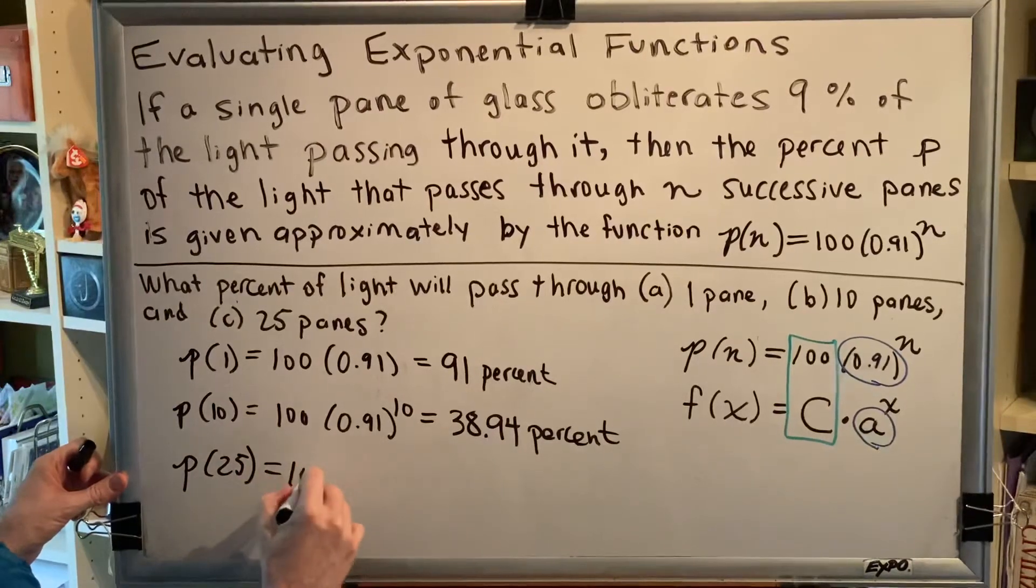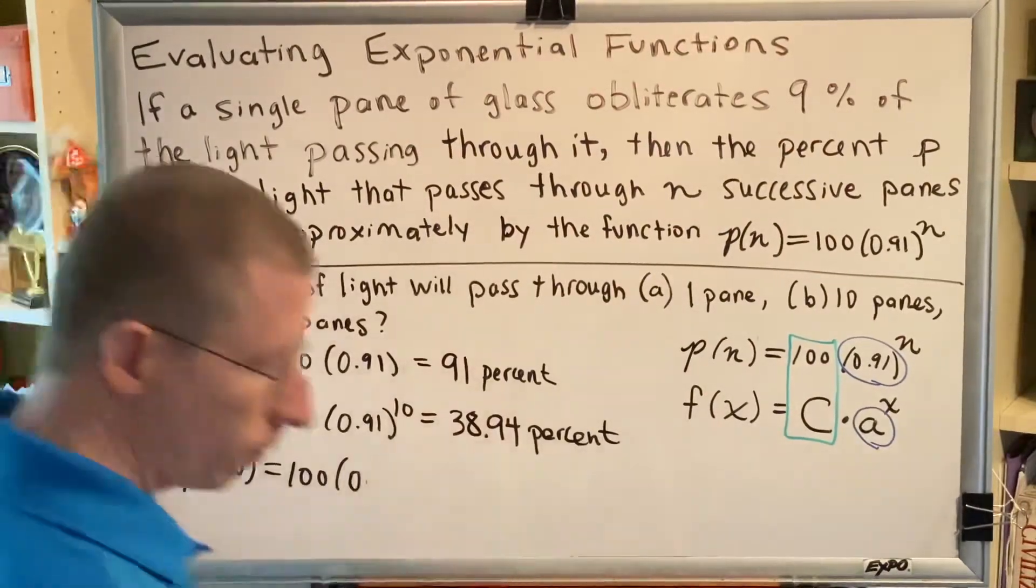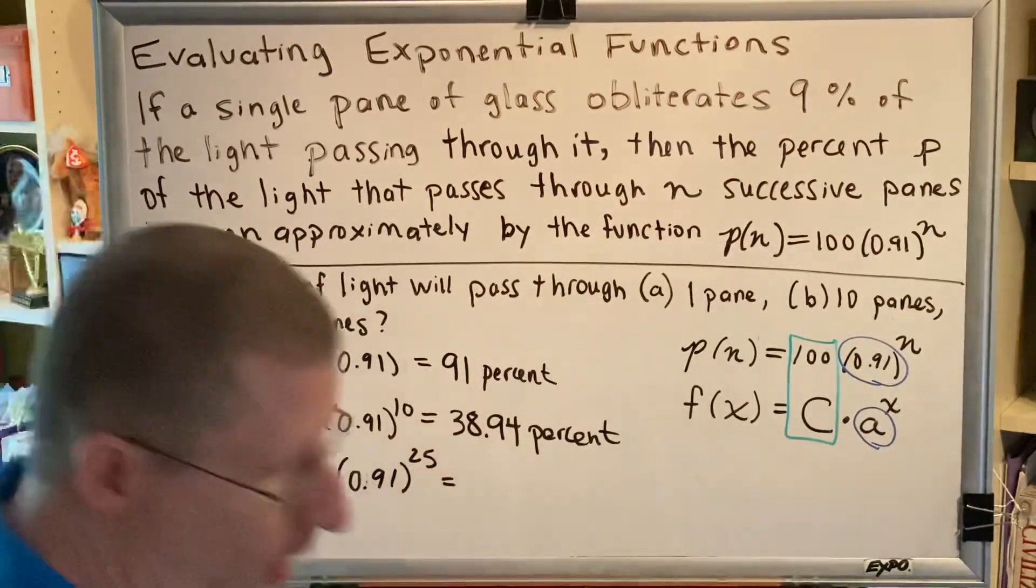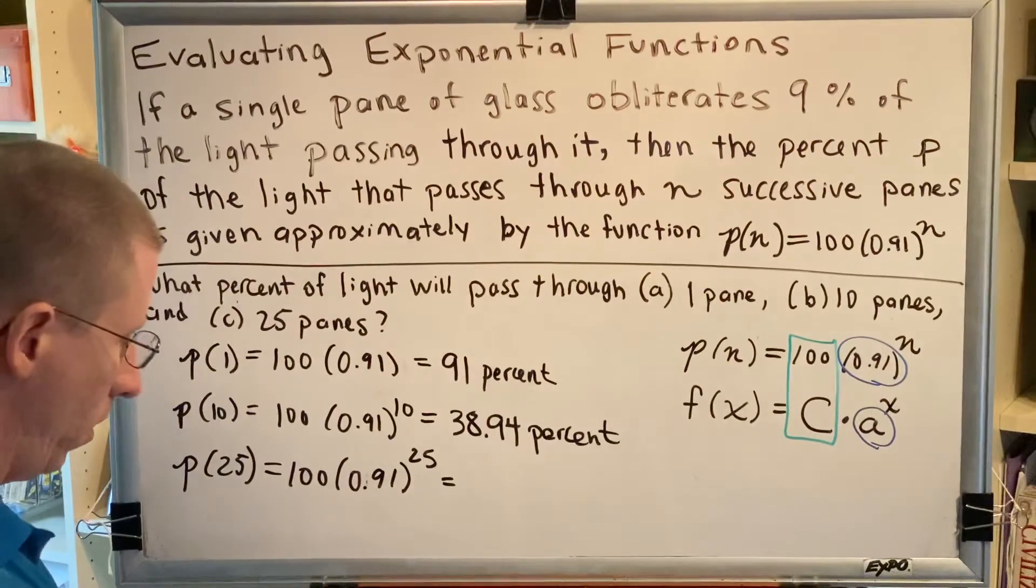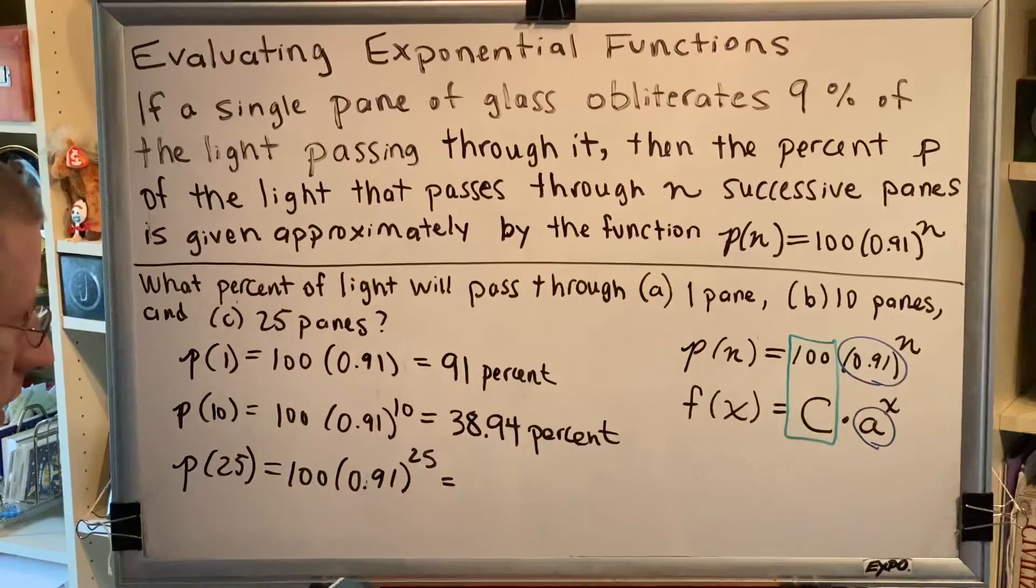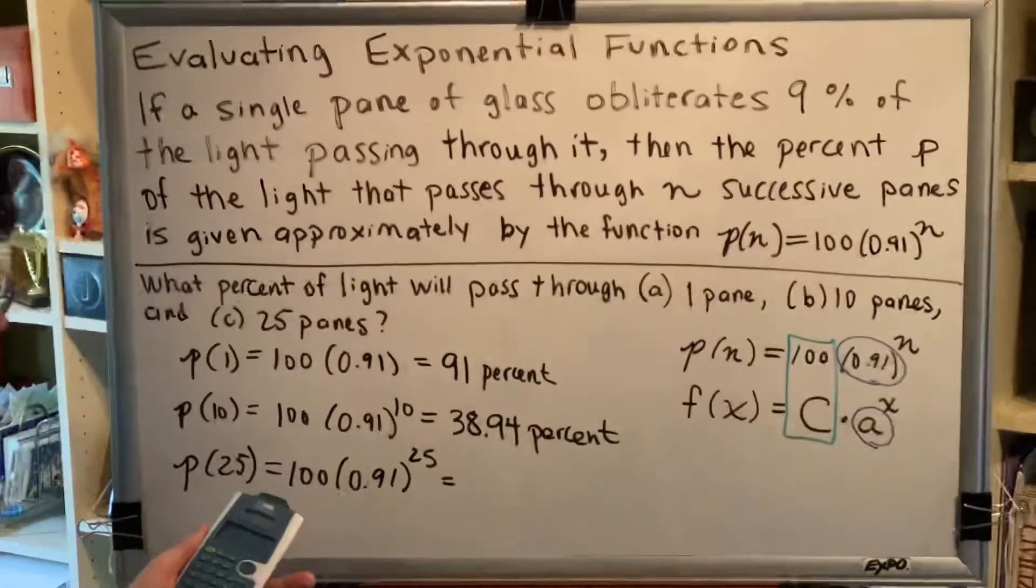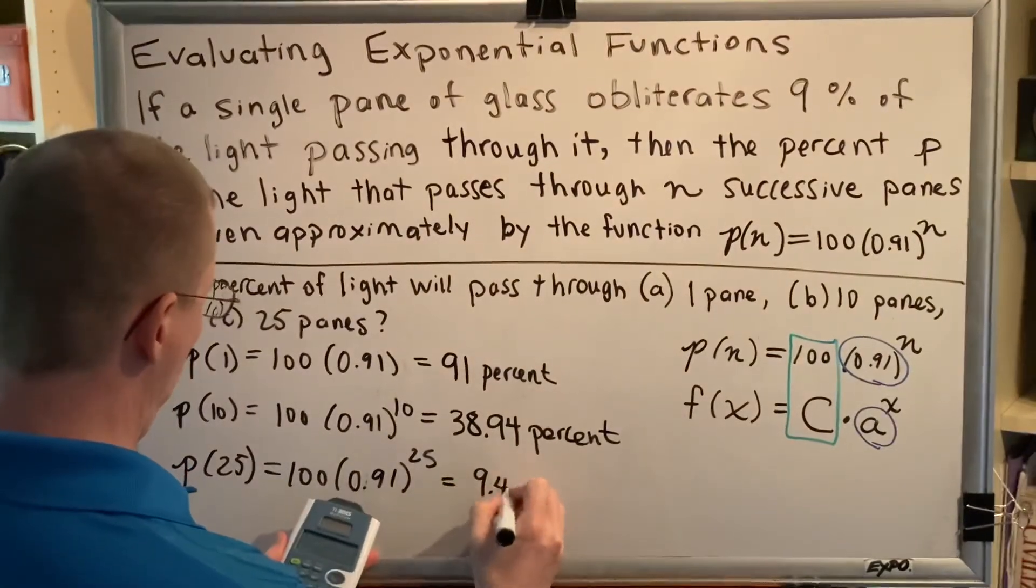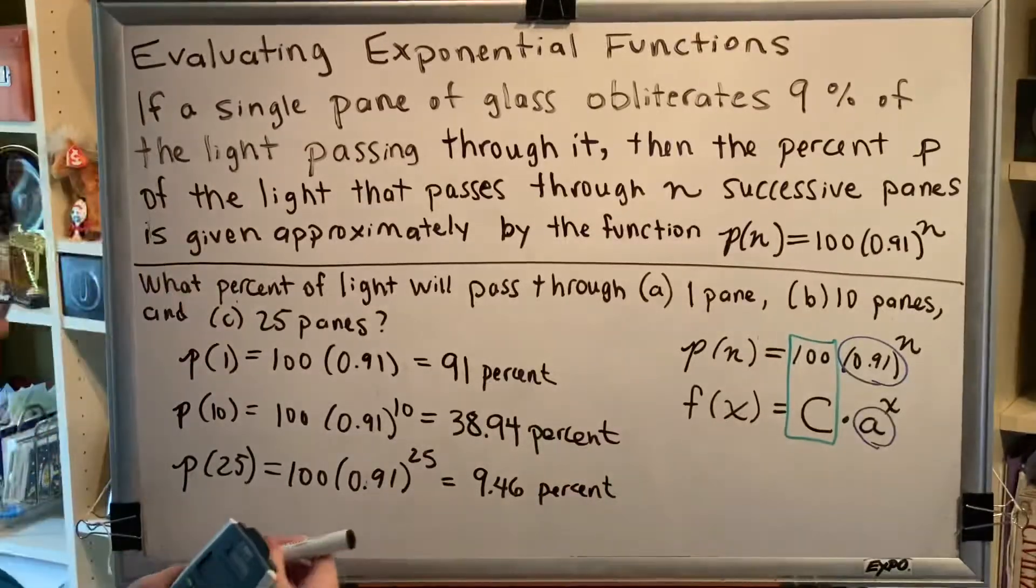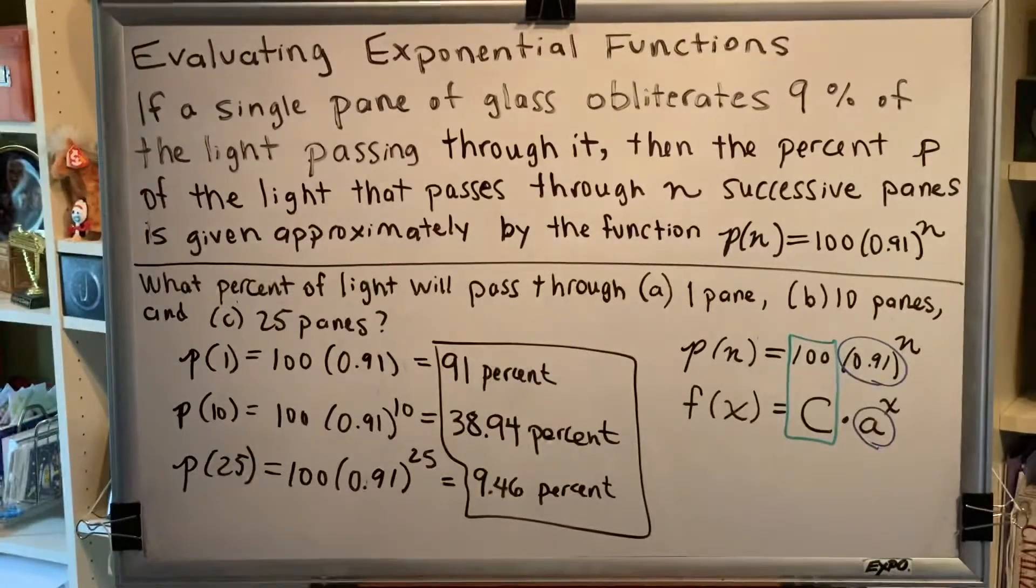Finally, we have p of 25. So we'll have 100 times 0.91 to the 25th power. So we've got 0.91 raised to the 25th power. That's 0.0946313. And then we're going to multiply that by 100. And then round again. We get 9.46%. So one problem with three parts, and there are our three answers.